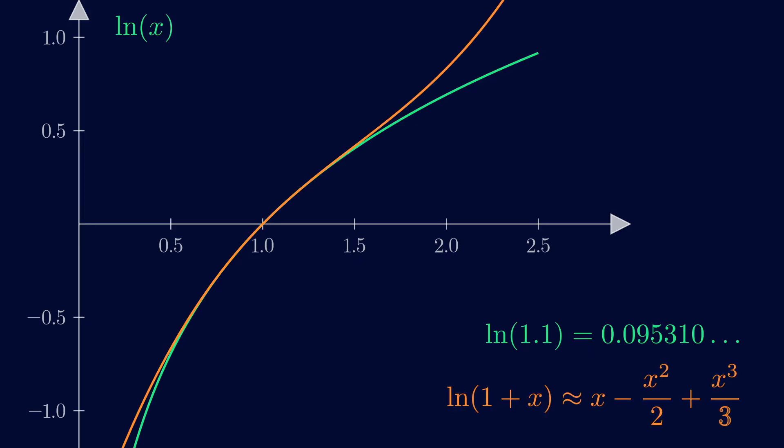The cubic Taylor expansion at 1 is this polynomial, so we can plug 0.1 into here and it gives us a pretty good estimate. This estimate is easy for computers to do because we're just adding and multiplying. So Taylor series is very important for evaluating these functions.